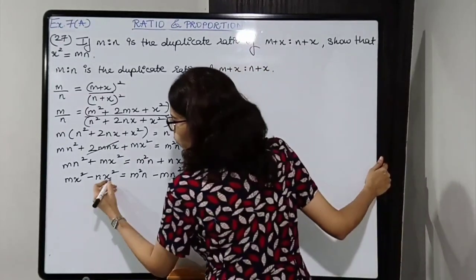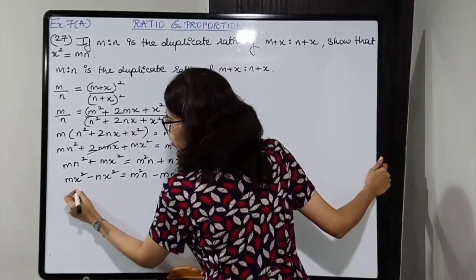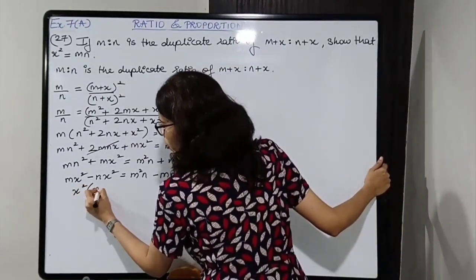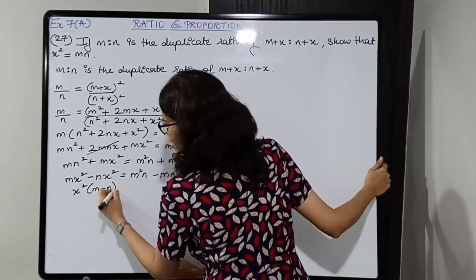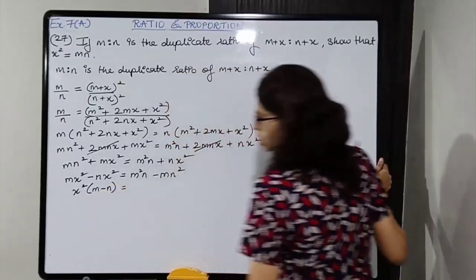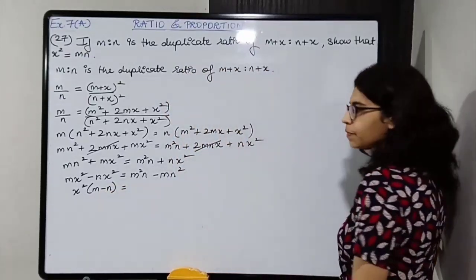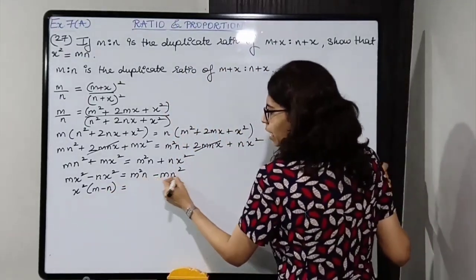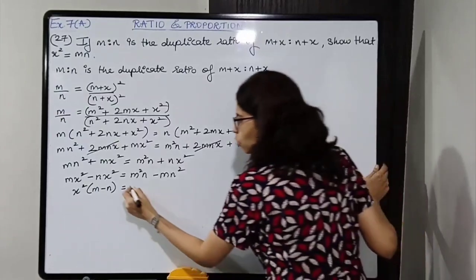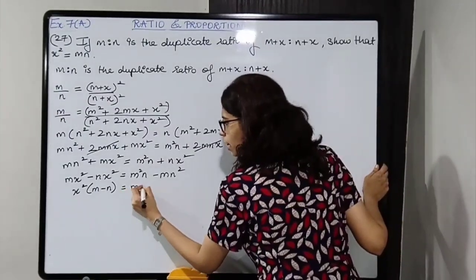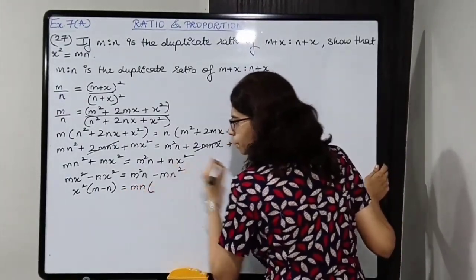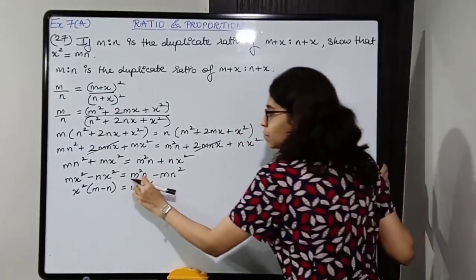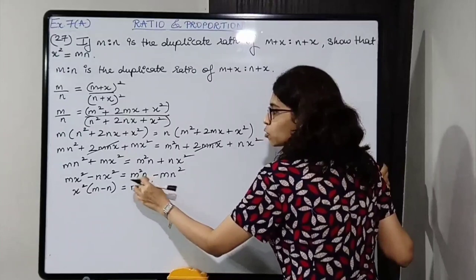We can take x squared common from the left side. Inside the bracket we are left with m minus n. On the right side, we can take mn common — mn is left with m minus n inside the bracket.